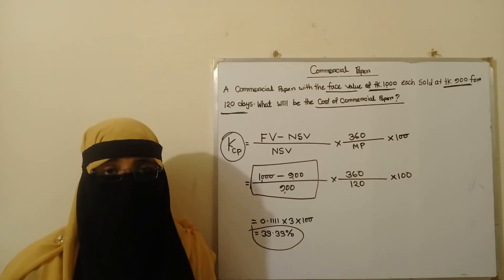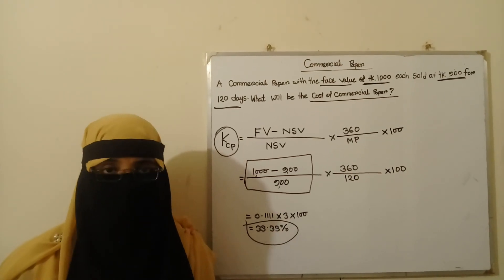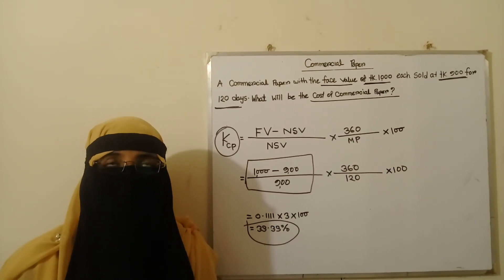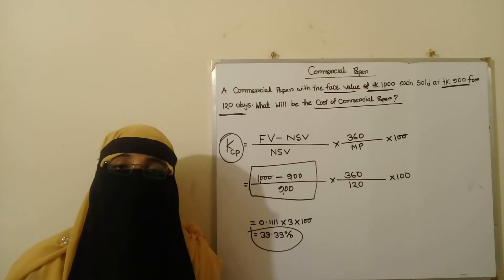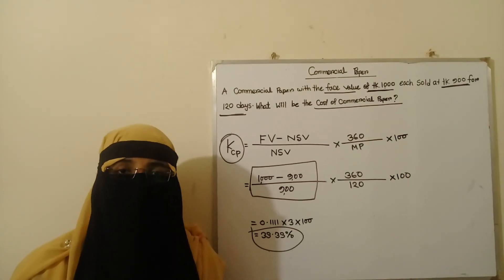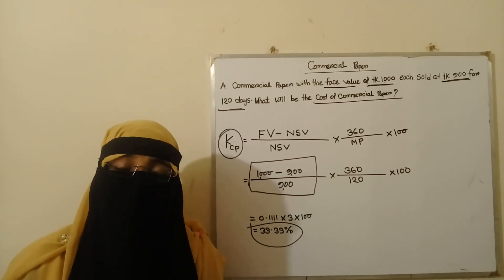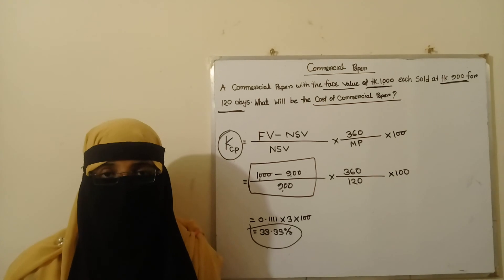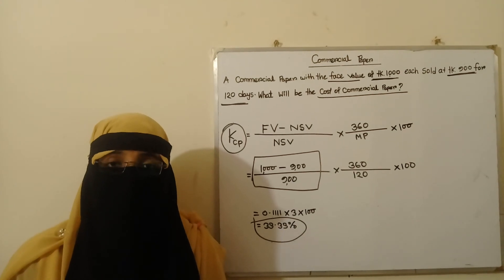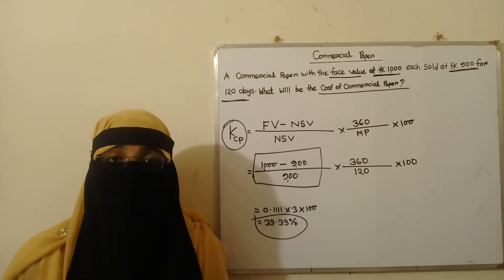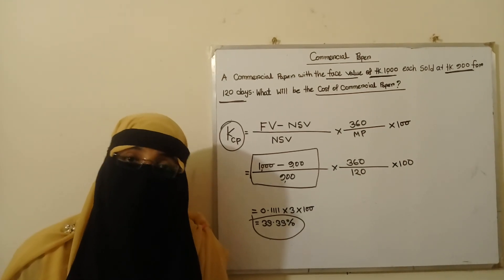This is from the Principles of Finance course, the short-term financing chapter. The cost of commercial paper, bank loan, and accounts receivable factoring are among the short-term financing sources. You need to calculate the cost of each source in order to decide which source to use to collect short-term funds.